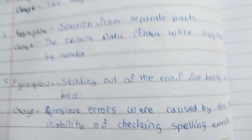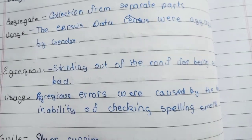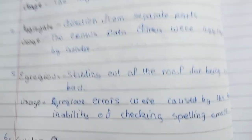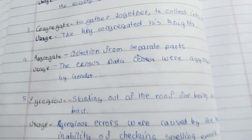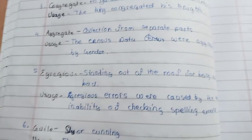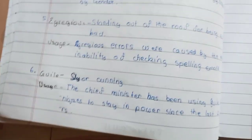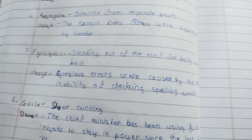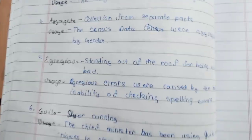Aggregate means a collection from separate parts. Usage: 'The census data were aggregated by gender,' meaning they collect census data on the basis of gender — how many women in a family, state, or area — then add up the figures and also record them separately by gender.